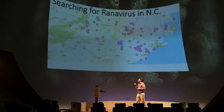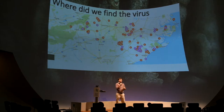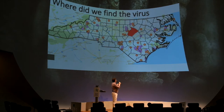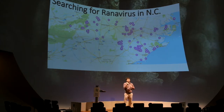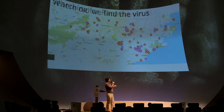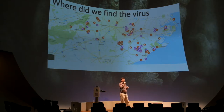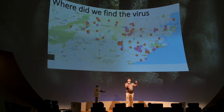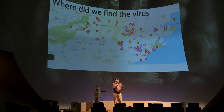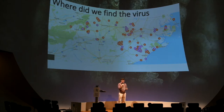Across the state of North Carolina, we collected over 350 samples and are continuing to accumulate more. The purple dots you see here represent the different sites from which we collected samples. On the following map, the red dots represent where we detected this virus. Ranavirus occurred pretty much spread throughout the state — much more commonly than I expected. It appears that this virus is pretty abundant.